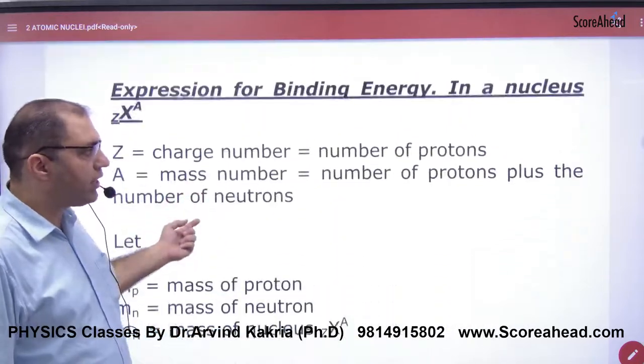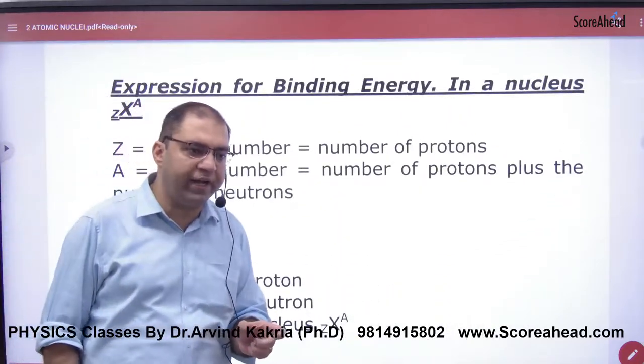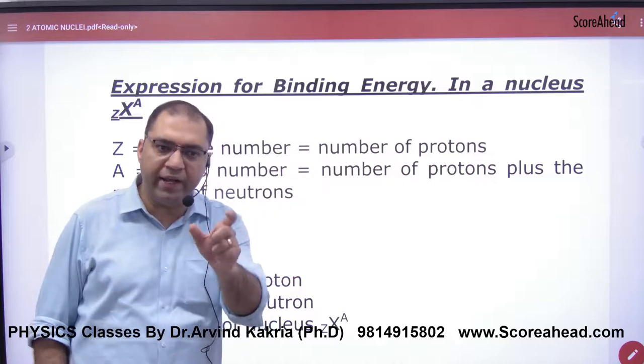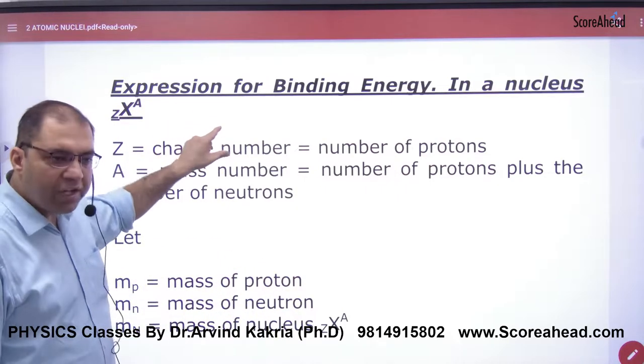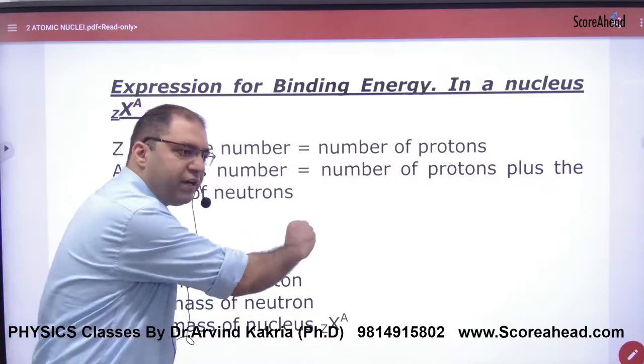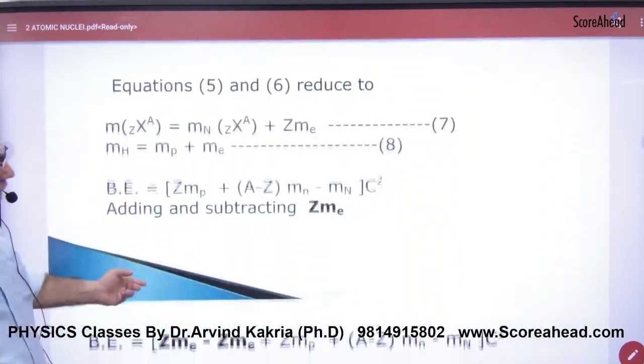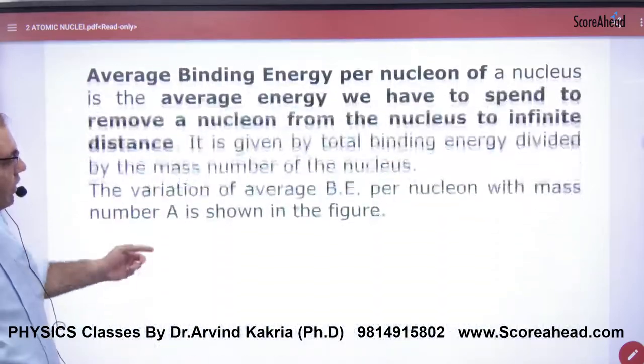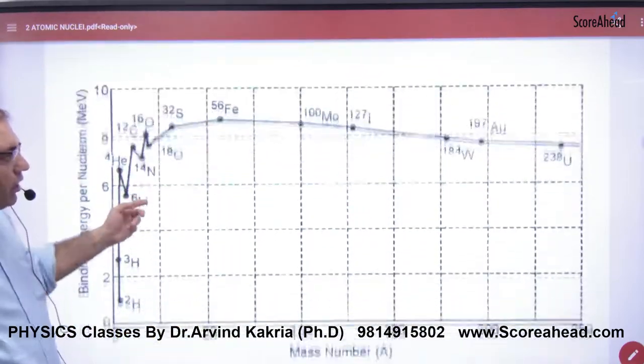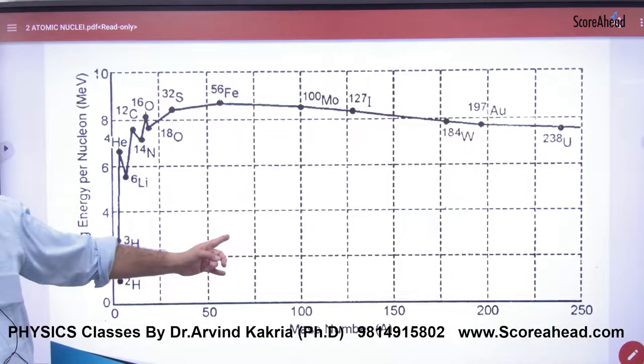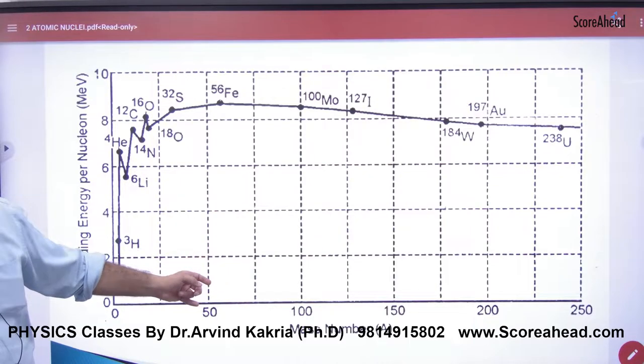In mass defect, we use delta m times c squared, which gives us the expression for binding energy. The binding energy expression is quite lengthy, so refer to the handwritten sheet. We've already covered this in the handwritten sheet. The graph has also been done - refer to handwritten sheet.